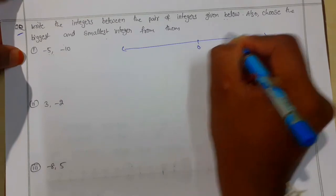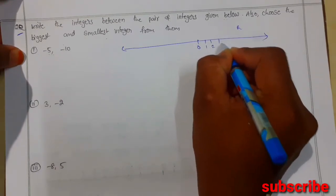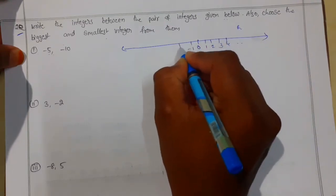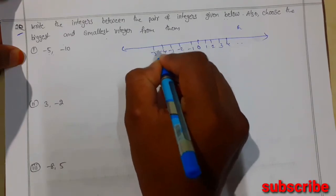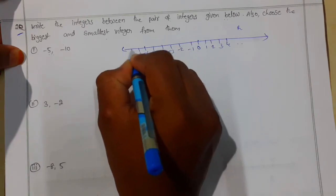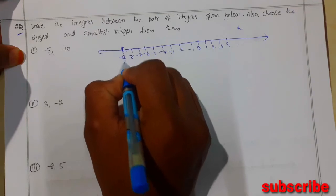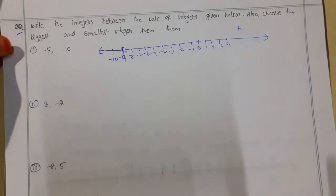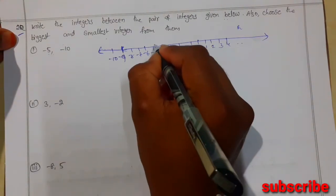If you take a number line, this is 0. Towards the right of 0 we take positive numbers: 1, 2, 3, 4 and so on. Towards the left we take the negative numbers: minus 1, minus 2, minus 3, minus 4, minus 5, minus 6, minus 7, minus 8, minus 9, and minus 10.